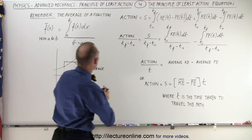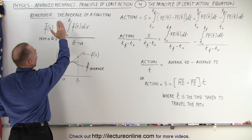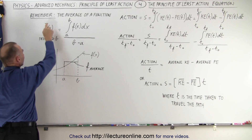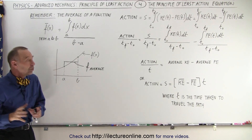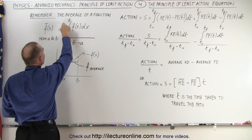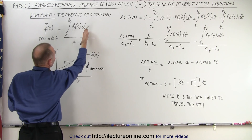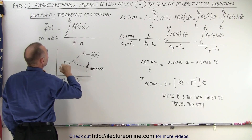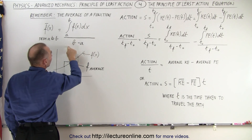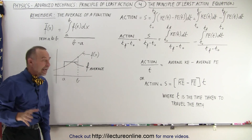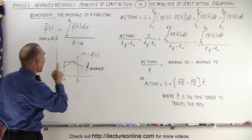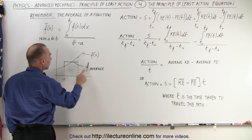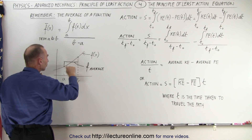Now let's go back to something we should remember: the average of a function. If we have a function and we want to know the average from point A to point B, we need to integrate it from A to B. Let's say it's a function of x, from x equals A to x equals B. If we take that integral and divide it by the interval on the axis, we get the average function. In other words, if we integrate the function of x from A to B, we get the area underneath the function.